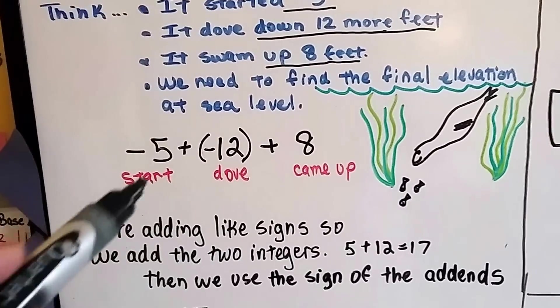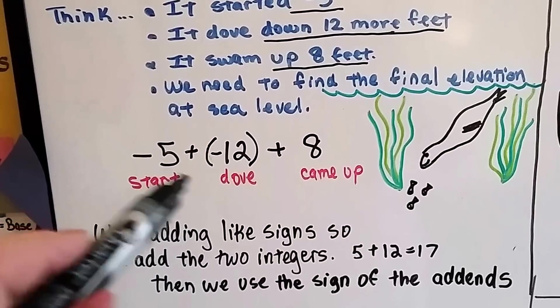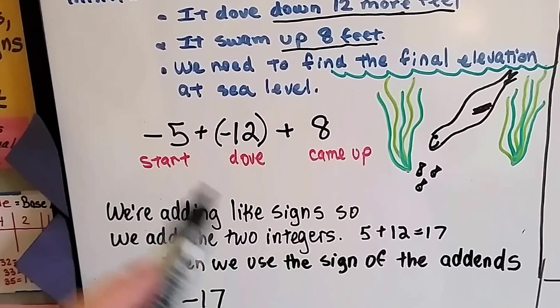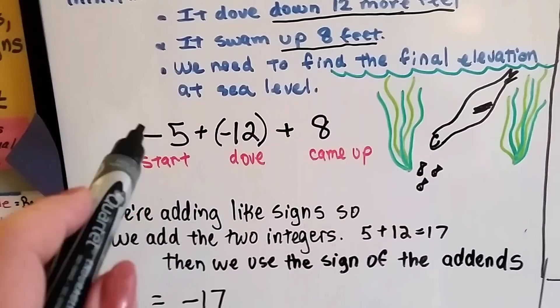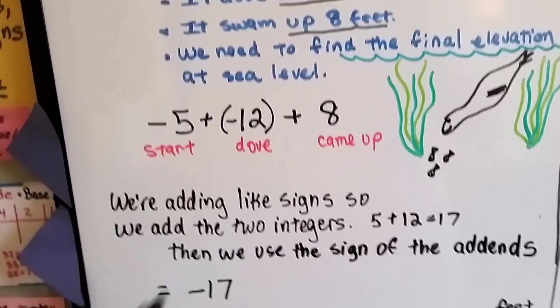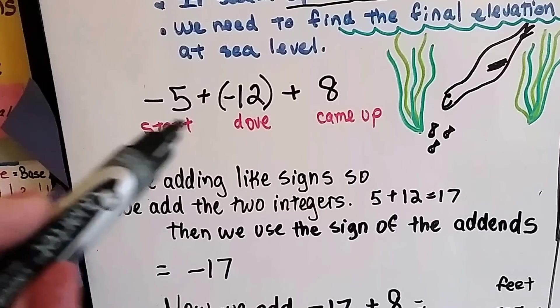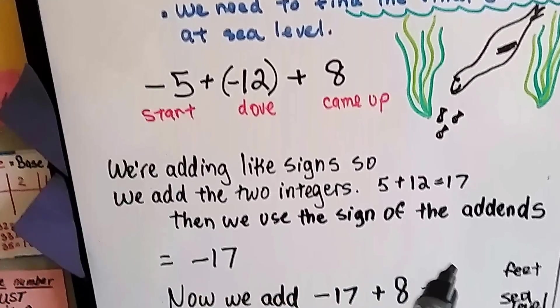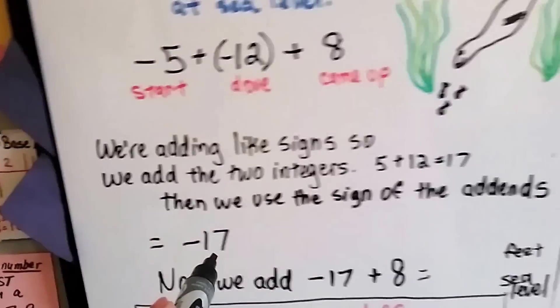We're adding like signs here, a negative 5 and a negative 12, and we just add the two integers when the signs are the same and we're adding. So that 5 plus 12 is 17, but what sign do we use? We use the sign of the addends that are alike, and since they both have a negative, we're going to use a negative. So we have negative 17.